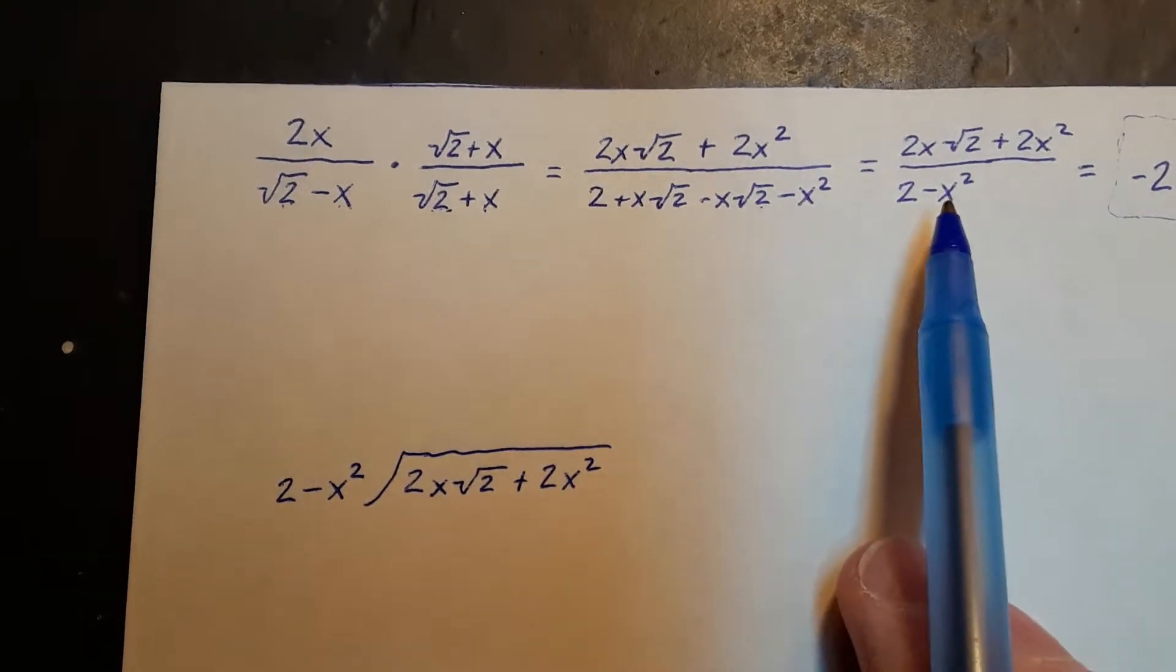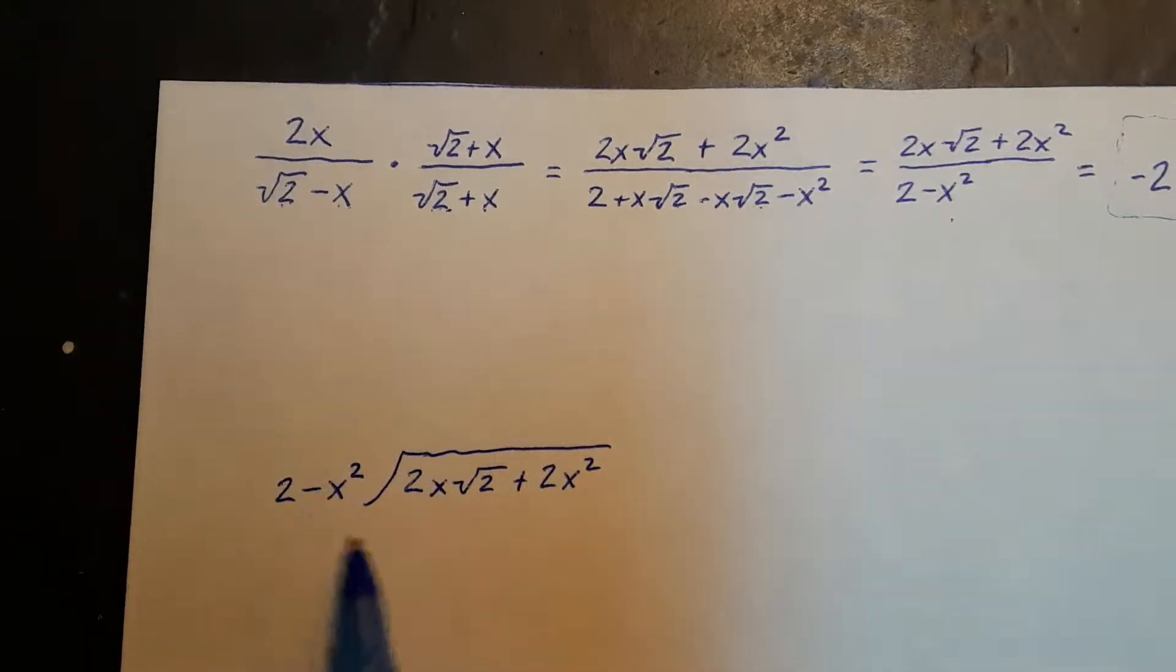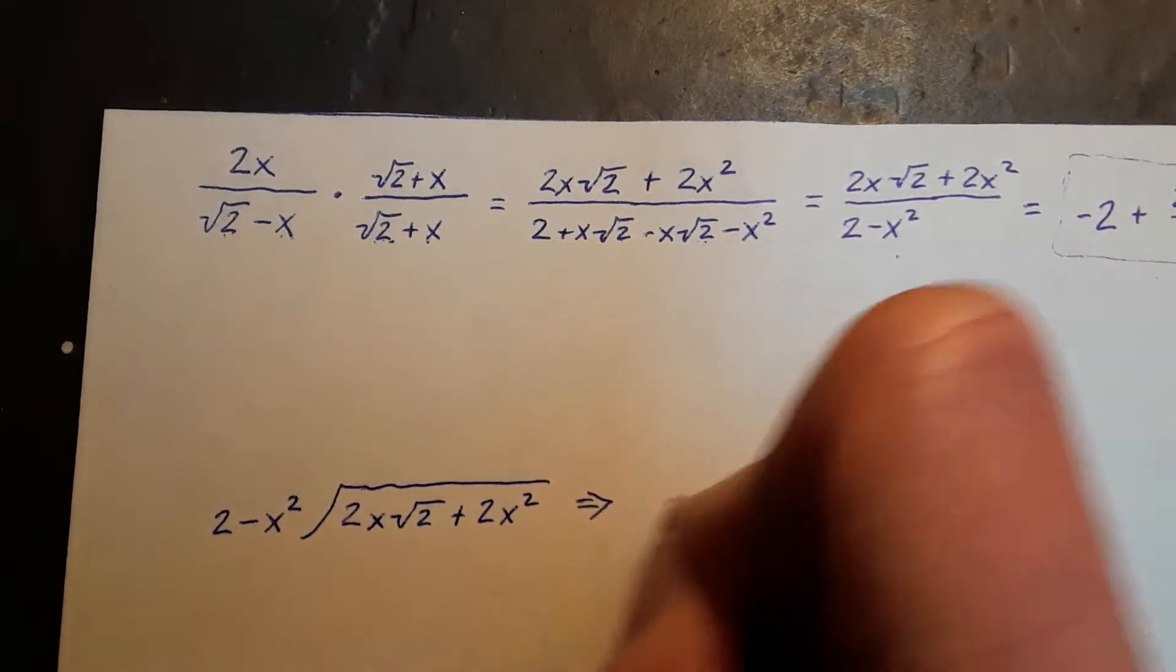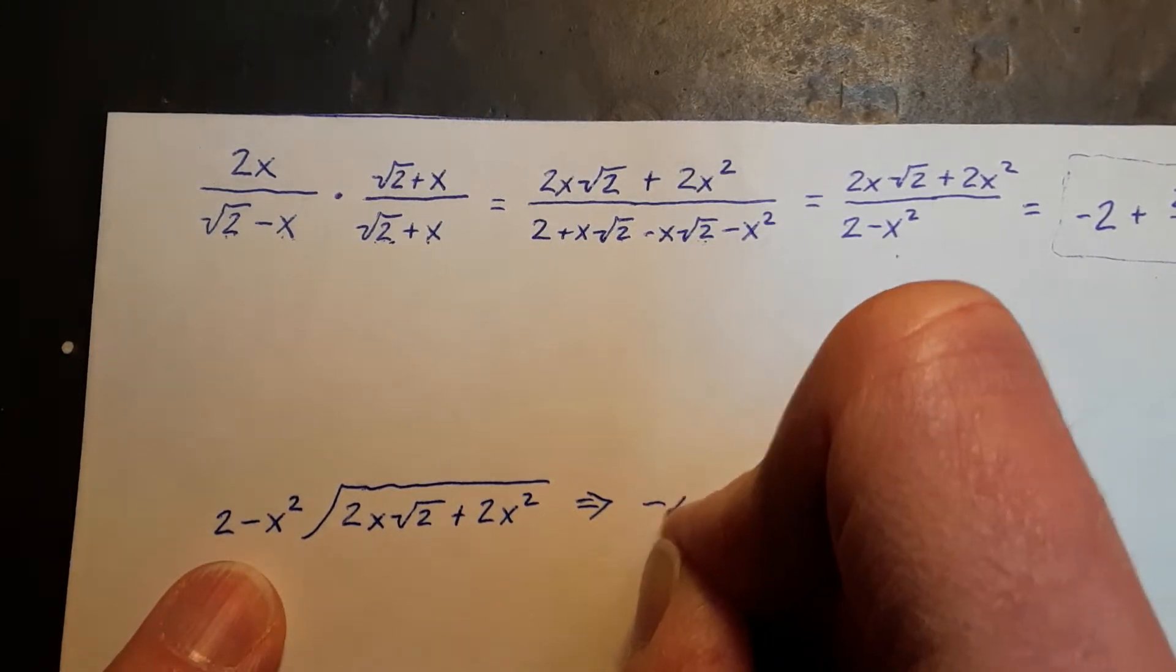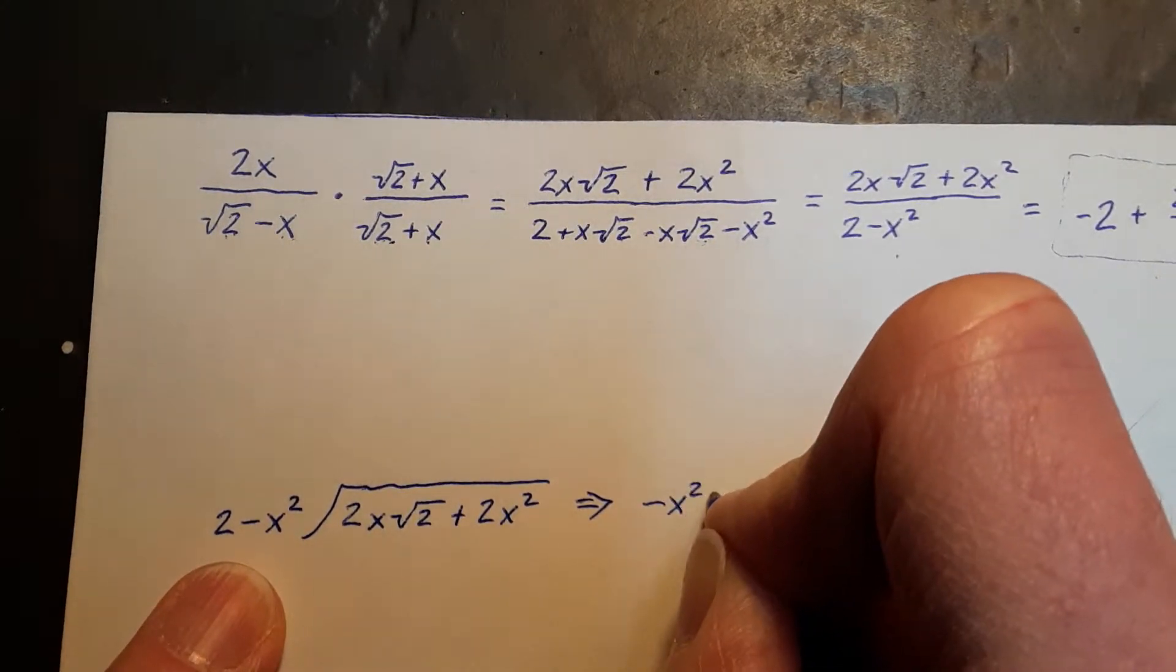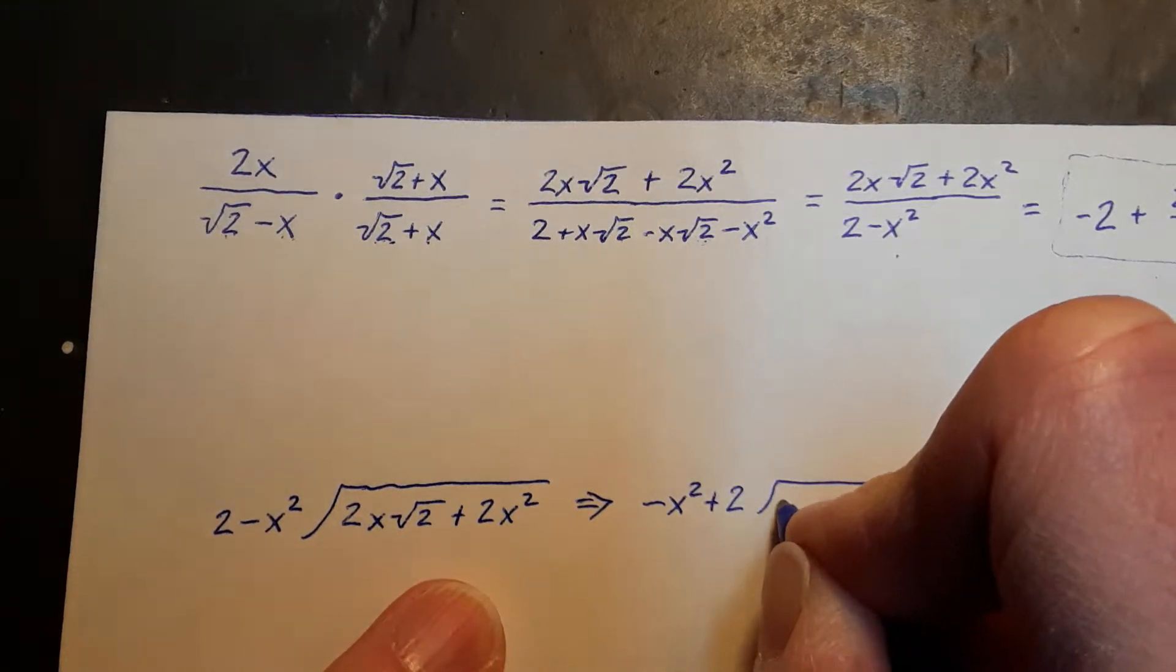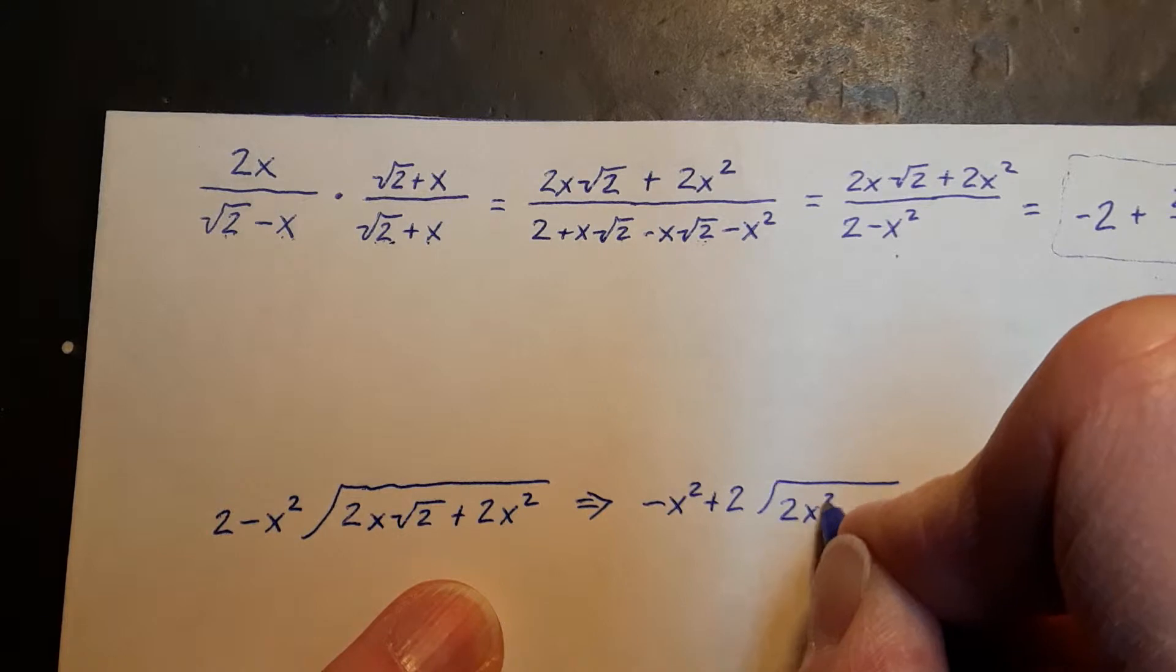And I'm going to rearrange this a little because this isn't quite the standard form that we like. So I'm going to rewrite this, switch the positions through the commutative property of arithmetic, and do the same here so that I have my largest exponents first.